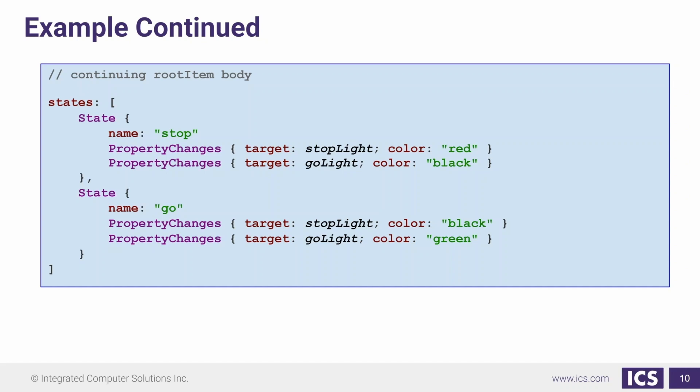If we look at the other state, we have our go state. In our go state, our stop light is going to be set to black and our go light's color is going to be set to green. Now, we have a collection of states, but we have no way to switch between them.